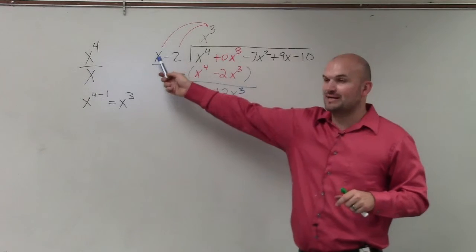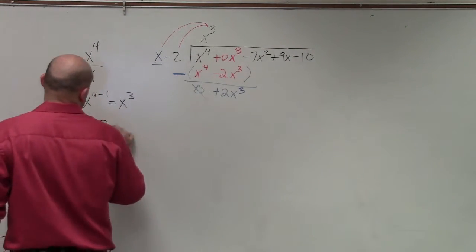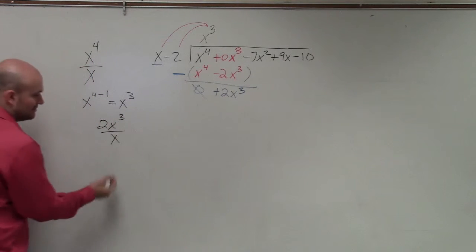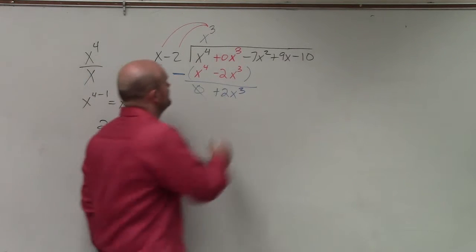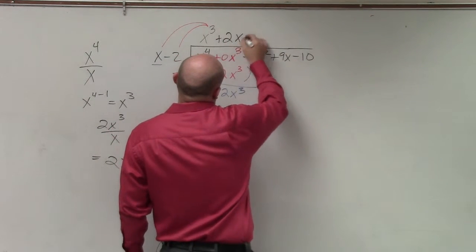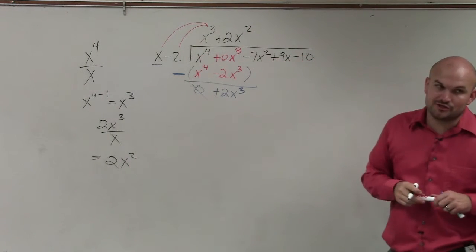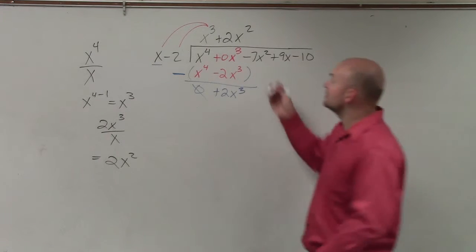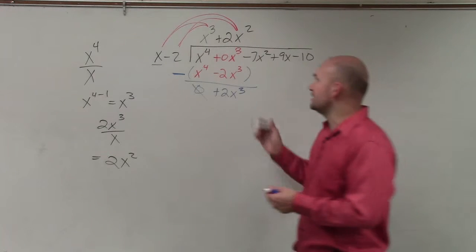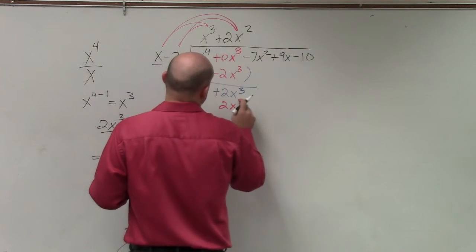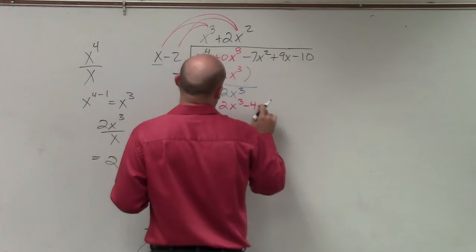Now we go back again. x divides into 2x cubed, 2x squared times. Now I multiply this by both terms: 2x squared times x gives you 2x cubed, and 2x squared times negative 2 gives you negative 4x squared.